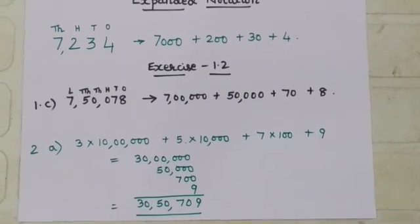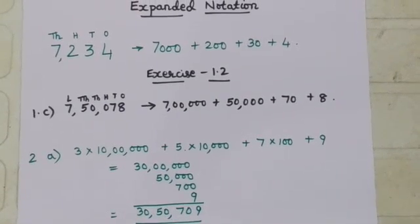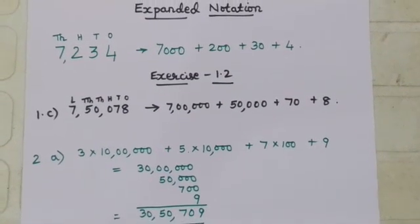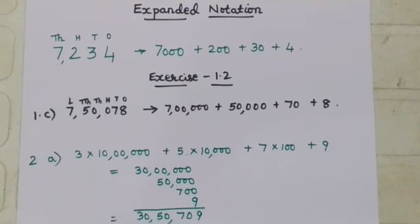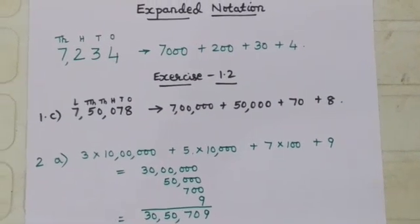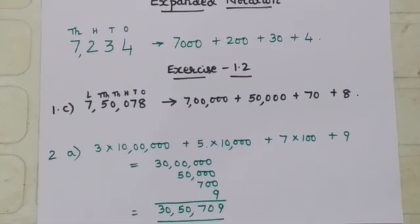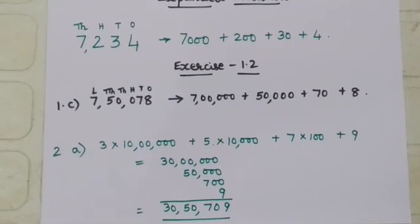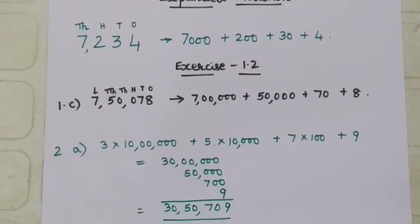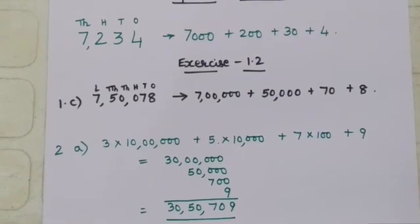We are writing the numeral in expanded notation. It helps us to get a clear idea of the place and place value of a digit in a numeral. Here, 7 stands in 1000's place, 2 stands in 100's place, 3 in 10's place, and 4 in 1's place.